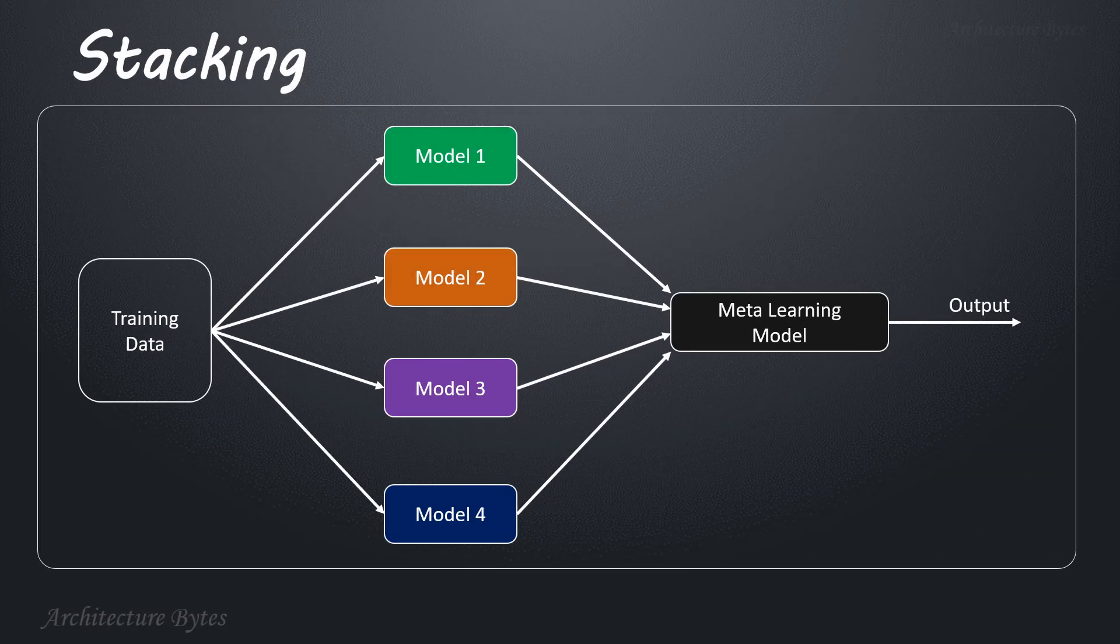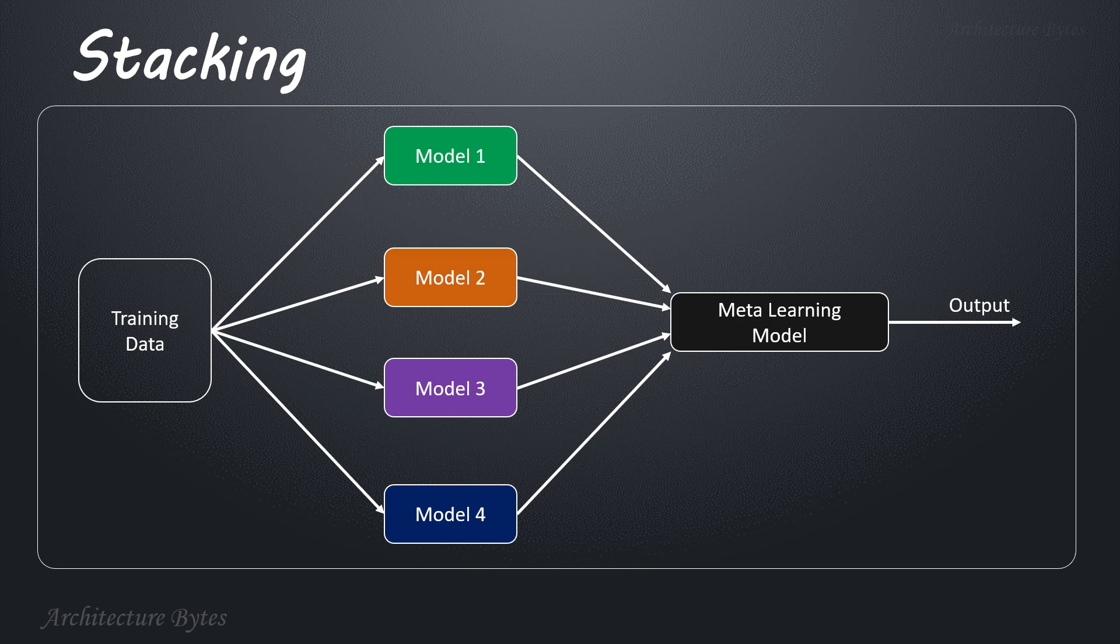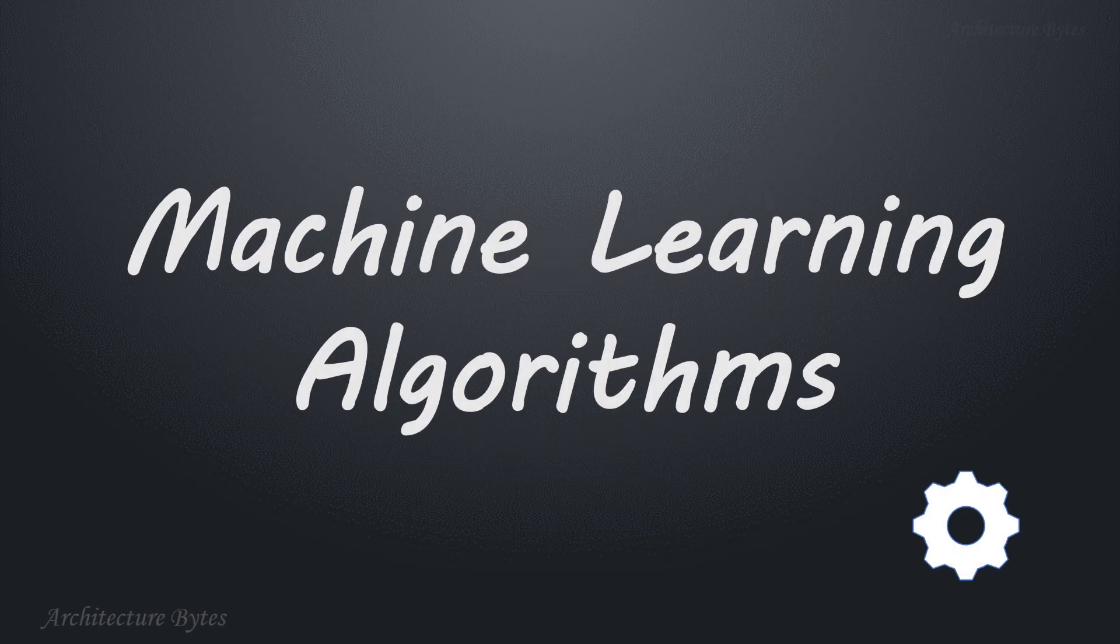Stacking combines multiple heterogeneous base models using a meta model to improve overall prediction accuracy by learning how to best aggregate their predictions. Using diverse models reduces bias and variance. It can often outperform single models and is effective in cases where no single model performs the best. However, this can be computationally expensive.